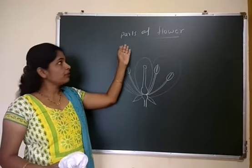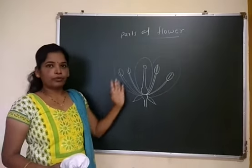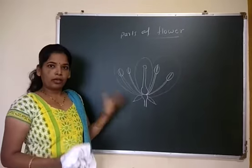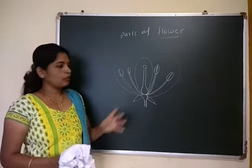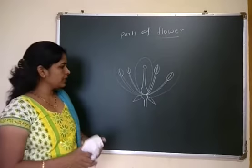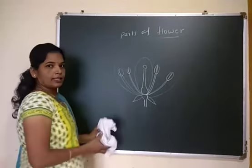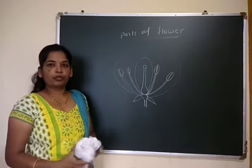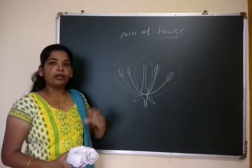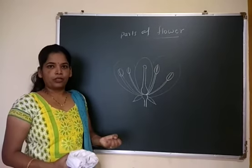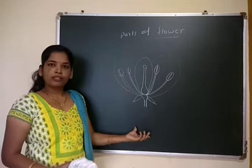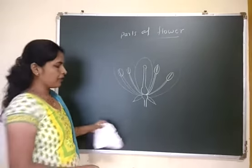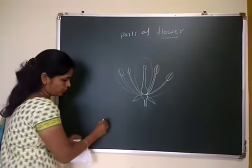Next in this video we are going to study about parts of flower. Flower is a modified shoot, meaning it is formed for sexual reproduction. Flower is the modification of shoot meant for sexual reproduction.